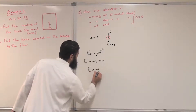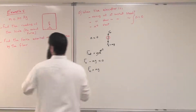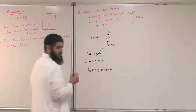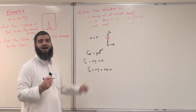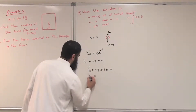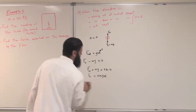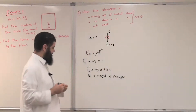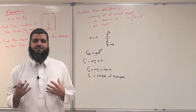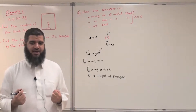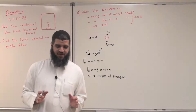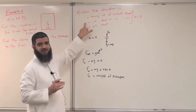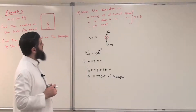So Fn equals Mg. The mass is 100 kilograms multiplied by 9.8, giving 980 newtons. As you can see, the normal force equals the weight of the passenger. You will get your actual weight if you stand on the scale in a non-accelerating frame — whether the elevator is at rest, moving down at constant speed, or moving up at constant speed.